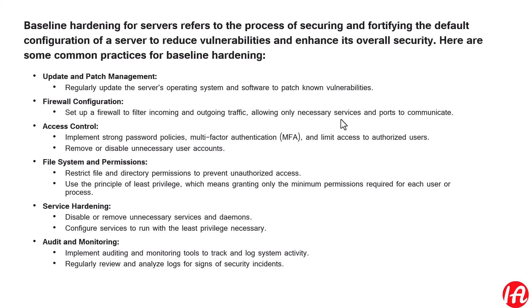For file system and permissions, restrict file and directory permissions to prevent unauthorized access, and use the principle of least privileges — granting only the minimum permissions required for each user or process. When formatting servers and creating folders, remove broad rights like 'Everyone' and use group-based permissions instead. This makes it easier to track who is accessing the servers and allows you to remove permissions at the group level when needed.